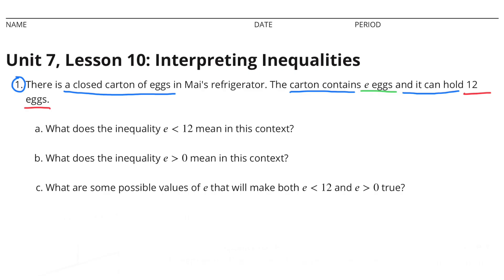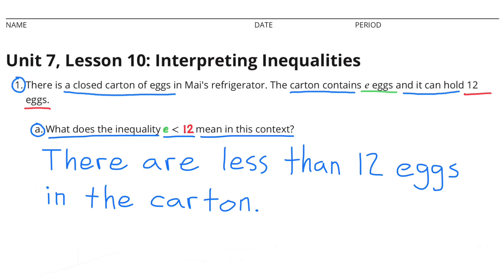Part A: What does the inequality E is less than 12 mean in this context? It means that there are less than 12 eggs in the carton.